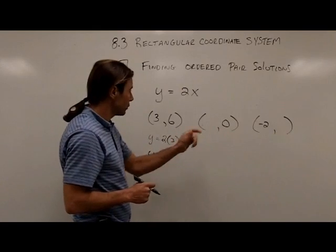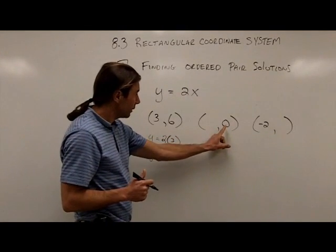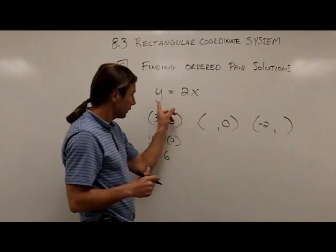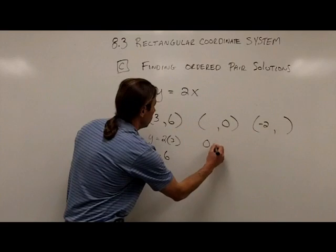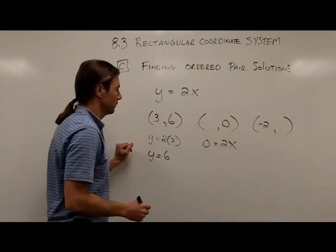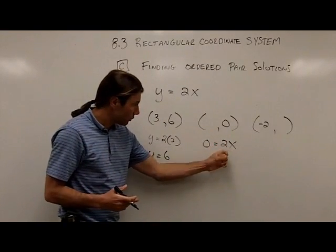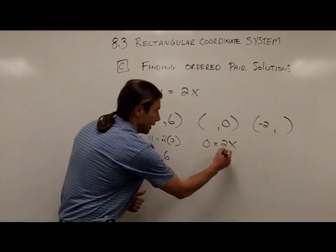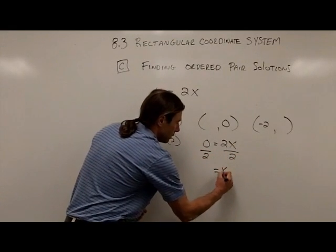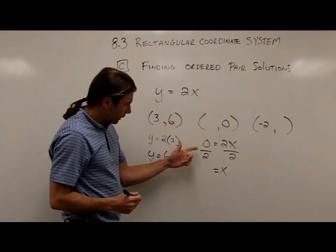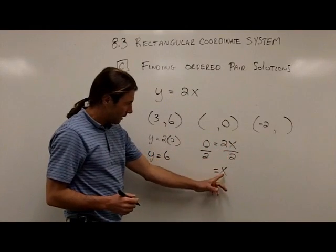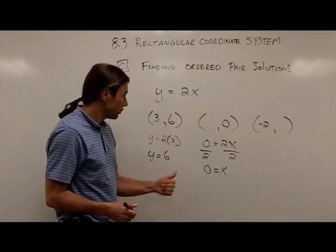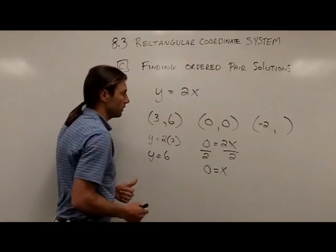My next ordered pair solution, I'm going to be putting a 0 in, but in this case, for y. Because remember, ordered pair is always x, then y. So in for y, I'm putting a 0. So I would have 0 equals 2x. Now I need to solve this equation for x. Well, x is getting multiplied by 2. To undo that, I would divide both sides by 2. And on the right side, the 2s divide out, leaving me with x. 0 divided by 2 is just 0. So the other part of this ordered pair solution is the point 0.